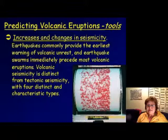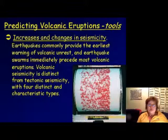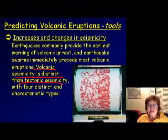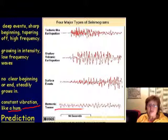Earthquake swarms usually mean that an eruption is coming. Volcanic seismicity has very distinct characteristics from tectonic seismicity. The most important sign is the harmonic tremor — you want to avoid being around when harmonic tremor is detected, because that is a for-sure sign of an imminent volcanic eruption.